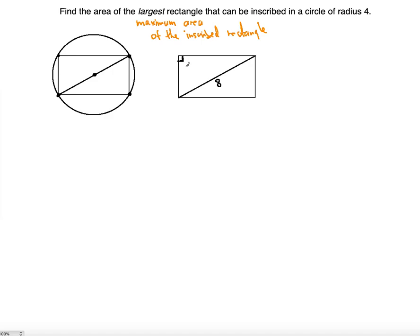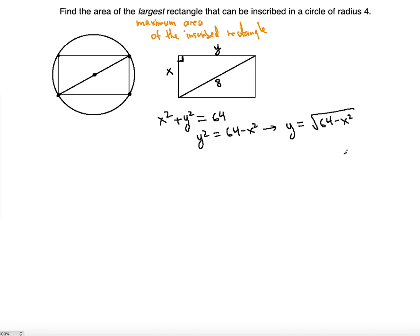This is a right angle because we're talking about a rectangle — rectangle sides are perpendicular to one another. So we can label the sides x and y, and use the Pythagorean theorem: x squared plus y squared equals 8 squared, which is 64. Solving for y, we get y equals the square root of 64 minus x squared.